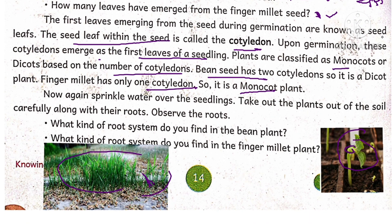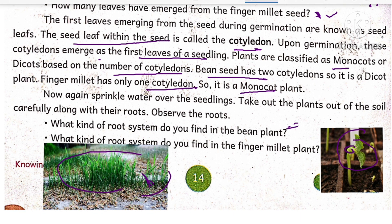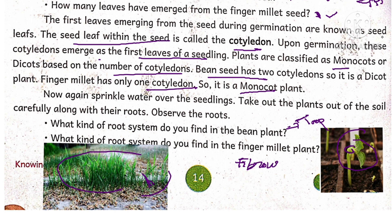Sprinkle water over the seedlings, then take out the plants from the soil carefully along with their roots and observe the roots. The bean plant has a taproot system. The finger millet has a fibrous root system. That means dicot plants have a taproot system, and monocot plants have a fibrous root system.